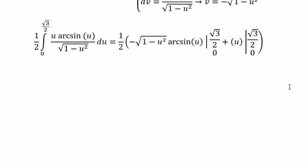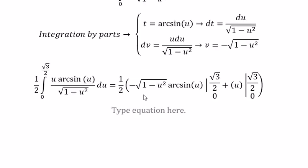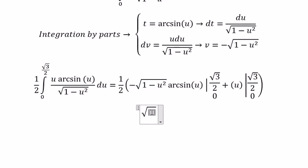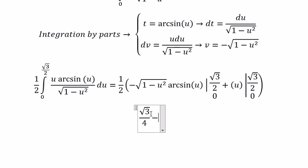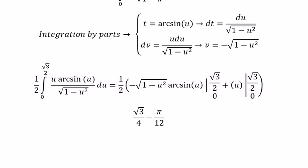And now we get the final answer. That should be about the square root of number 3 over 4 minus pi over 12. That's the end. Thank you for watching.